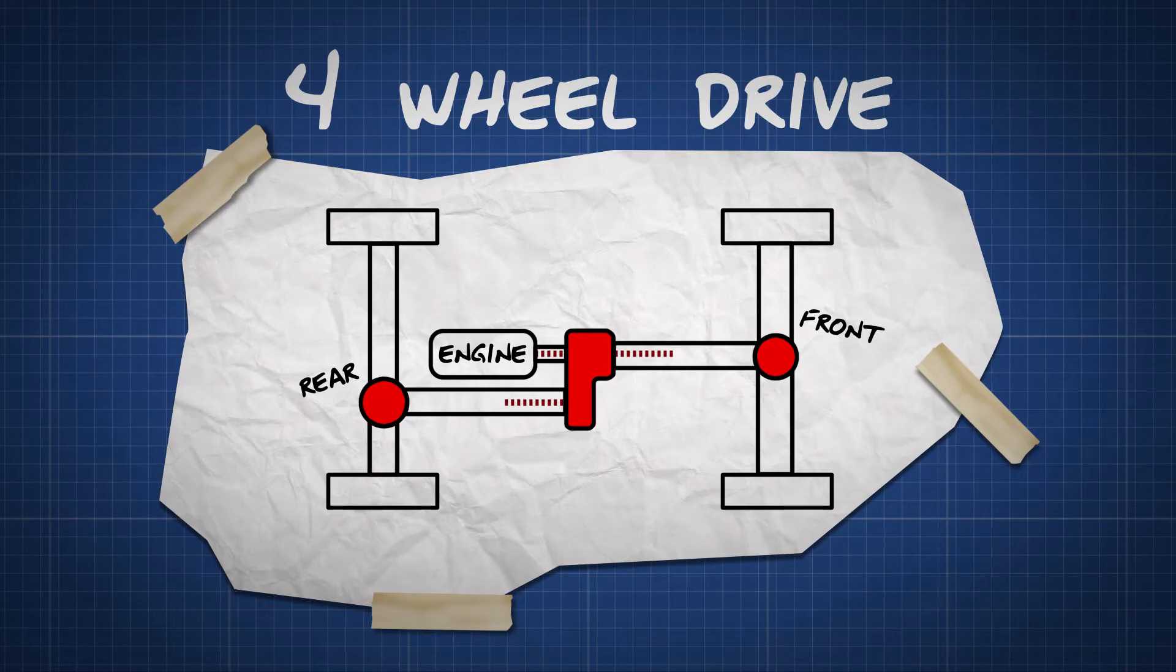Four-wheel drive systems allow your engine to distribute torque evenly to all four wheels. This gives you more control over your vehicle and gives you a smoother drive on different types of driving surfaces.